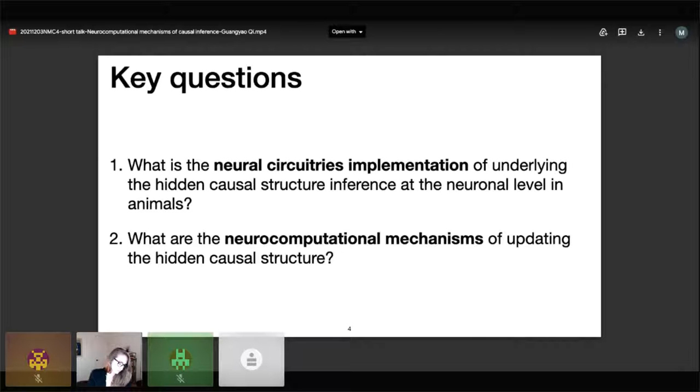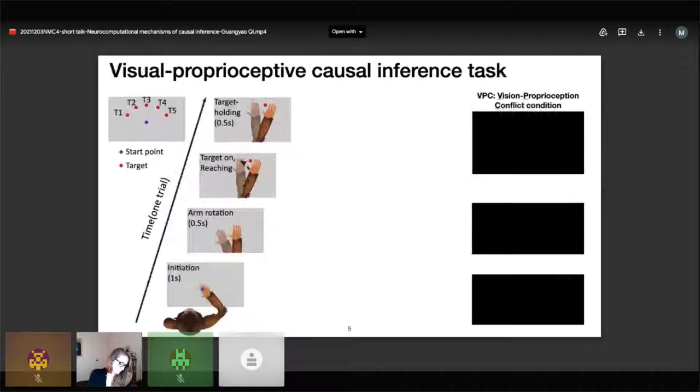Here we ask two key questions. To address these questions, we conducted single-unit recordings in macaques while they performed a causal inference task. During this task, the monkey inferred to reach the target by his perceived arm, and we manipulated the visual arm to manipulate the disparity.